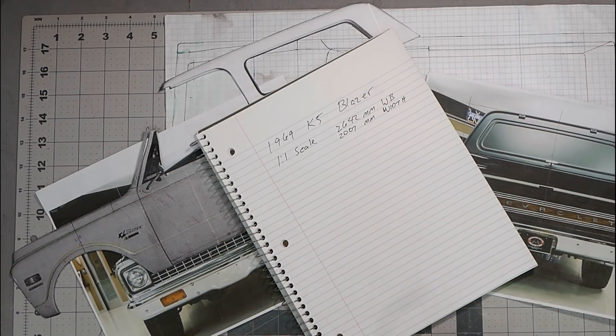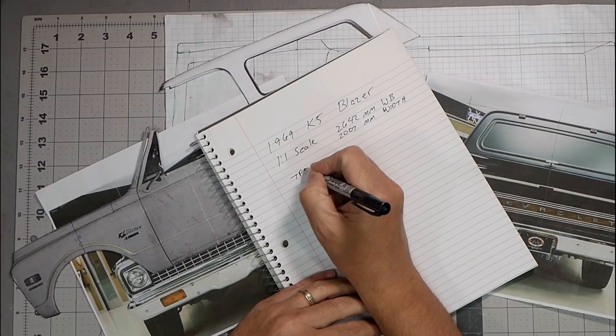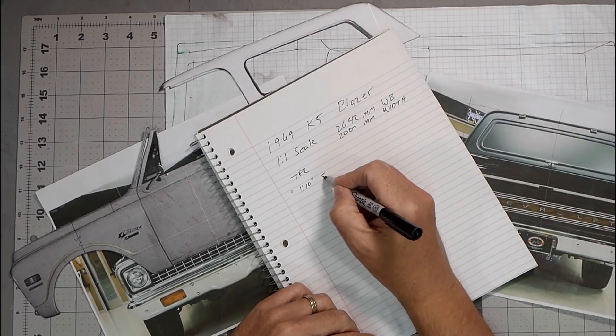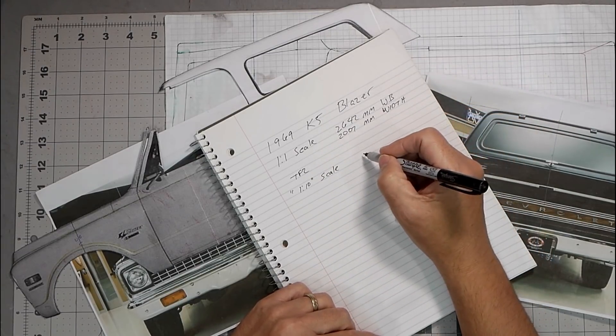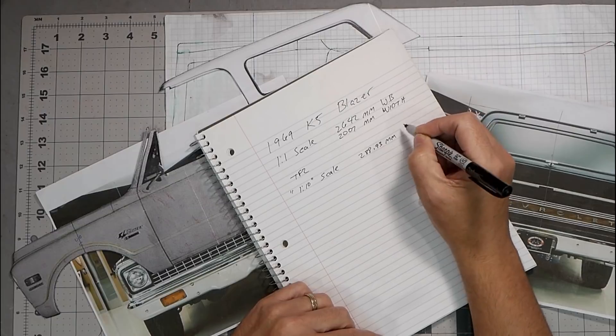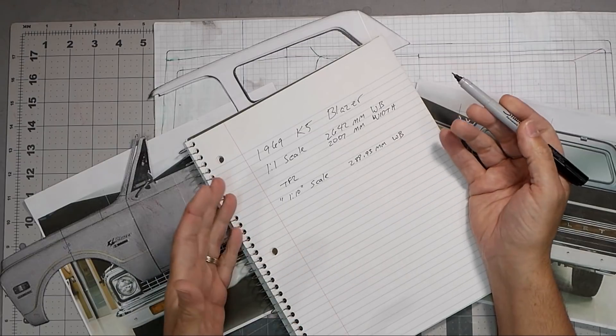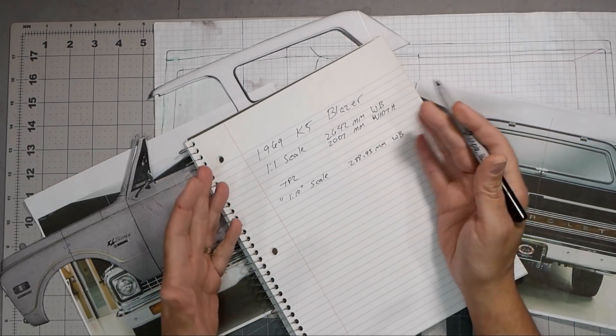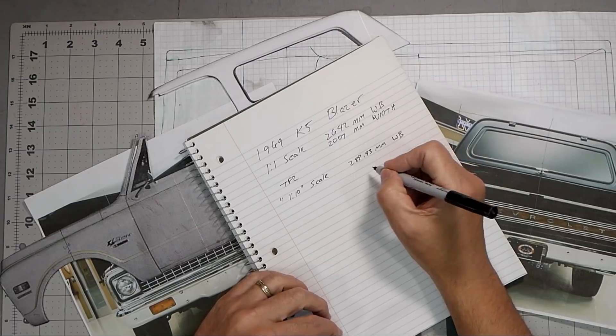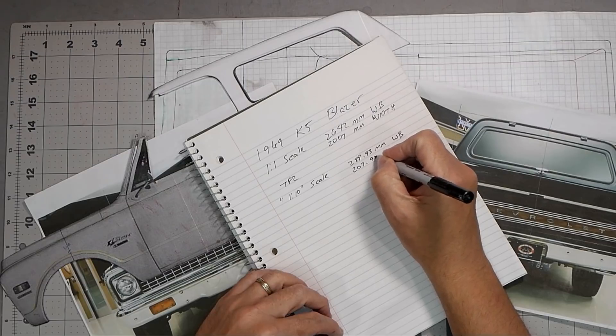And so then you have to say okay well what kind of chassis am I going to be putting this on. This one happens to be going on a TF2. So we're going to say this is the quote-unquote 1 tenth scale. And so it's 288.93 millimeters and that's the wheelbase. You don't have to get this precise but I just converted this over from inches. When you're getting smaller it's better to keep as many digits as you can. So the width is 207.96 millimeters.